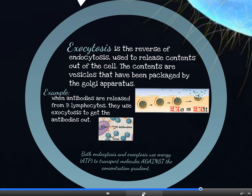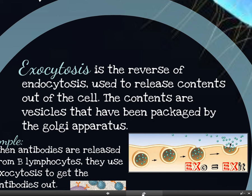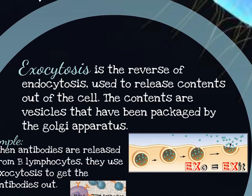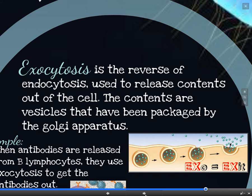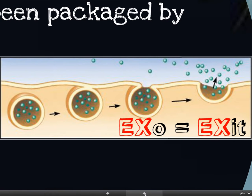Exocytosis — exo meaning out — is how some contents are released from the cell. They're packaged into vesicles from the Golgi apparatus. For example, in a goblet cell, proteins are made by ribosomes into the endoplasmic reticulum. A vesicle buds off the endoplasmic reticulum and fuses onto the Golgi apparatus, where some proteins might be packaged or modified. Then a vesicle buds off the Golgi and makes its way to the surface, where it fuses onto the membrane and the contents are expelled. This is basically the exact opposite of endocytosis.